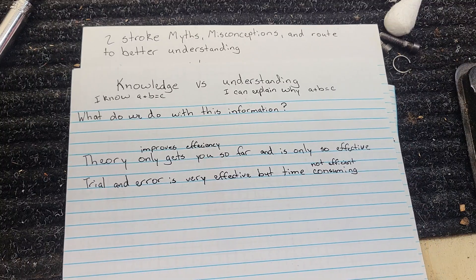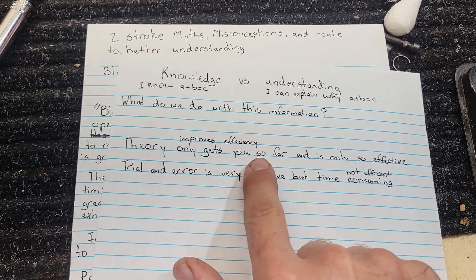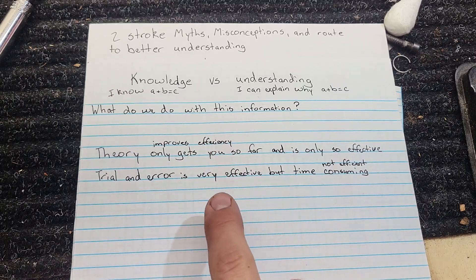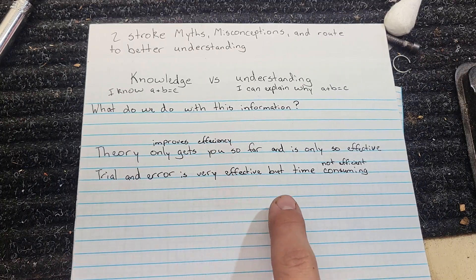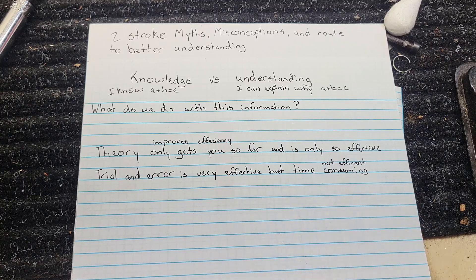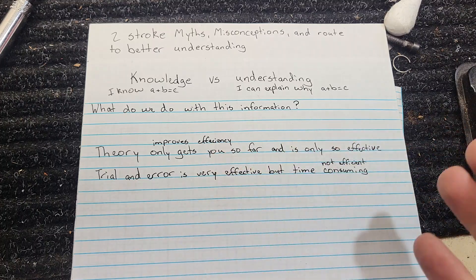So, the goal here is to improve, use some knowledge or understanding to improve efficiency. To improve your trial and error, which is not very efficient. If you can learn or understand something better,